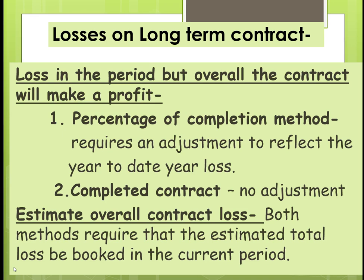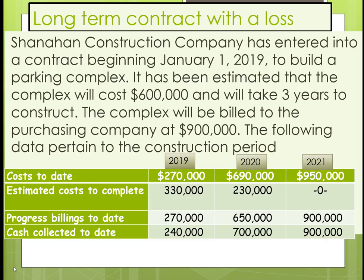Now we're going to look at an example. Shannon Construction has entered into a contract beginning in 2019 to build a parking complex. It will cost $600,000 over three years, and they will bill the customer $900,000. Here is what happened between 2019 and 2021, showing cost to date, estimated cost to complete, progress billings, and cash collected.